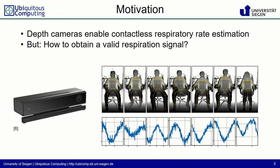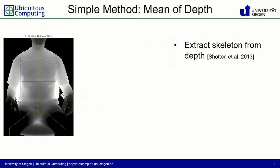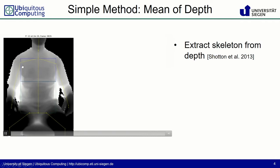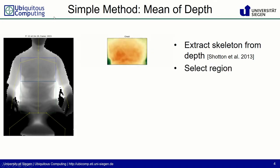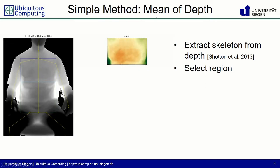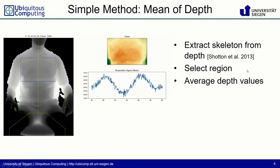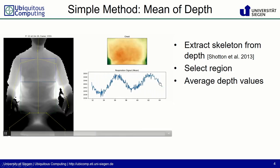But how can we do this? How can we obtain a valid respiration signal? We start with the depth data and extract the joint positions, and use these joint positions to select a region like for example the chest. With the pixels inside this region we can then form a principal component analysis, compute a mean or the median. In our case we simply average all pixels and we obtain a respiration signal.